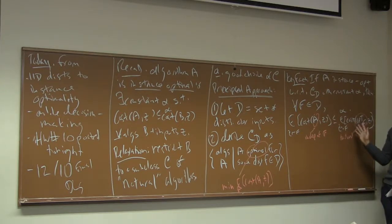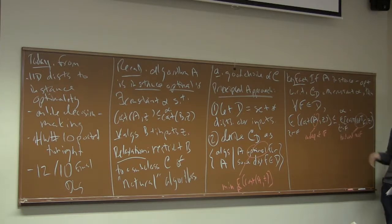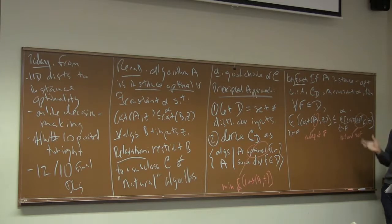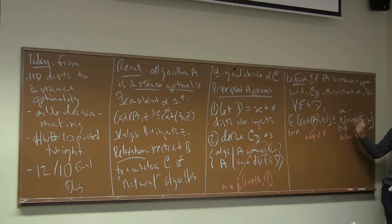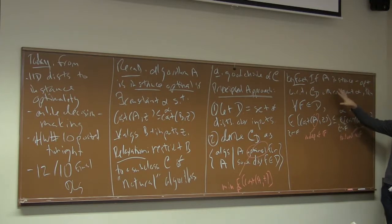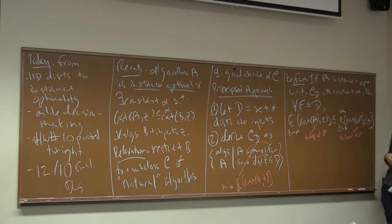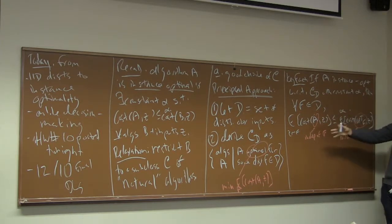Think about two scenarios. In one, I tell you the distribution over inputs, then you pick whatever algorithm you want — you'll pick the optimal one. In the much more unfair world, I don't tell you the distribution; I force you to first pick the algorithm, then I show you the distribution, constrained only by the distribution being in script D. If there's an instance-optimal algorithm, you lose only a factor of alpha between these two worlds. There's a way to hedge your bets: if there's an instance-optimal algorithm, you're simultaneously near-optimal no matter what F is — robustly near-optimal as long as you believe the distribution comes from script D.